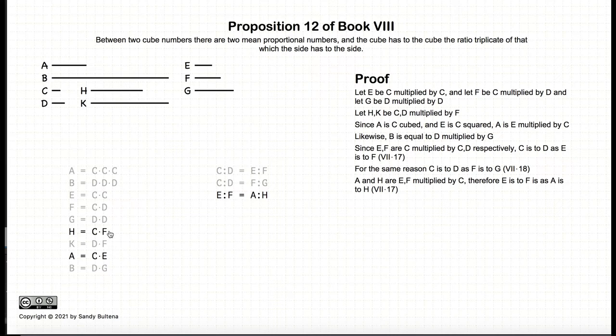We have that e is to f as a is to h. Now, e to f is equal to c to d. e to f is equal to a to h. So c to d is equal to a to h.